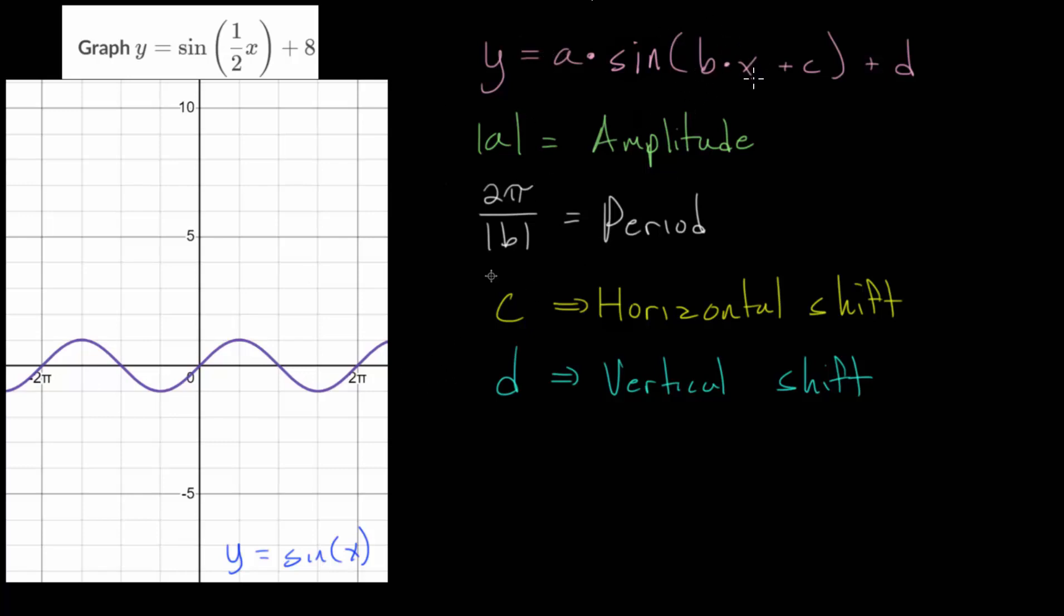b, this number multiplied by x, will tell us our period based on this formula. c will determine horizontal shifting, moving the entire curve to the left or to the right. And d, adding or subtracting on the outside, will move the function either up or down. It will change the equation of the midline.